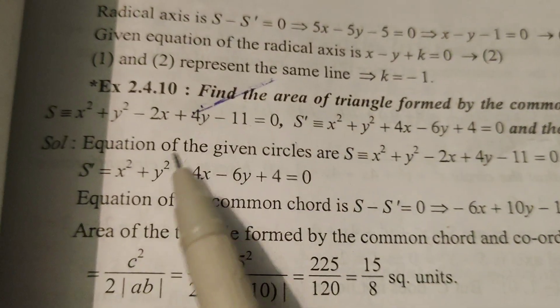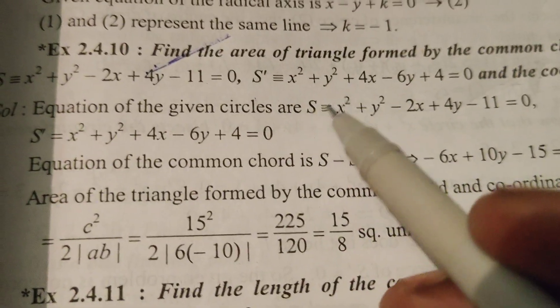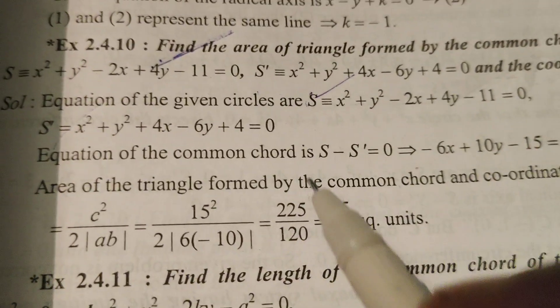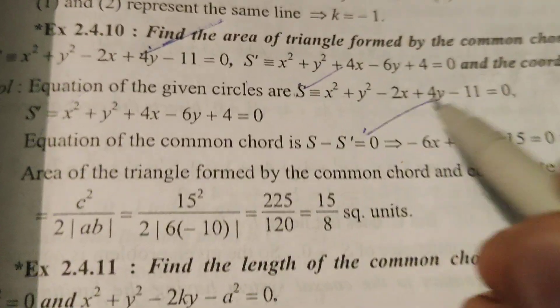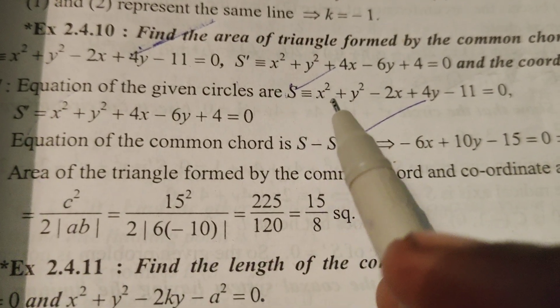And the coordinate axis. The equations of the given circles are here. First of all, S and S dash. The equation of the common chord is, by formula, S minus S dash equals 0. Now here substitute S minus S dash.